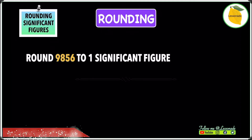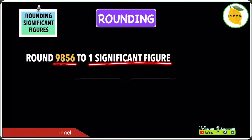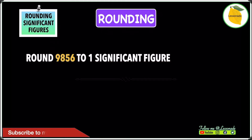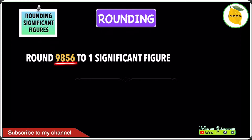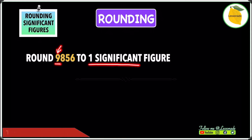The question we have is: round 9,856 to one significant figure. The first thing we need to know with significant figures is that the first significant figure always starts with the first non-zero digit. In this number, which is 9,856, we have no zeros. The first non-zero digit is 9, and therefore 9 will be our first significant figure.